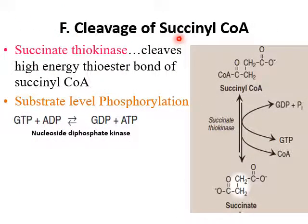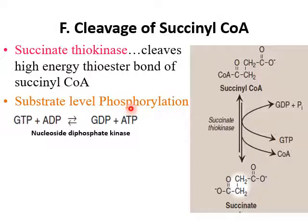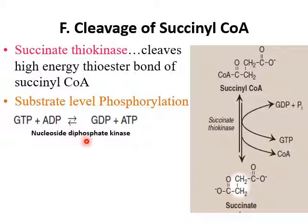The next step is cleavage of succinyl-CoA. Succinyl-CoA is enzymatically broken down into succinate with the help of succinate thiokinase enzyme, and coenzyme A is released. The energy from breaking this bond is used to make GTP from GDP and inorganic phosphate — this is called substrate-level phosphorylation because GTP is directly produced. This GTP is further converted into ATP by nucleoside diphosphate kinase enzyme, with the reaction: GTP + ADP → GDP + ATP.